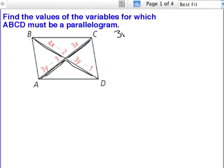First thing, we've got 3y minus 3 equals 3x, and then we have 4x minus 2 equals 3y minus 1.